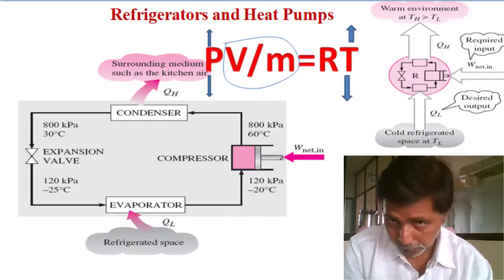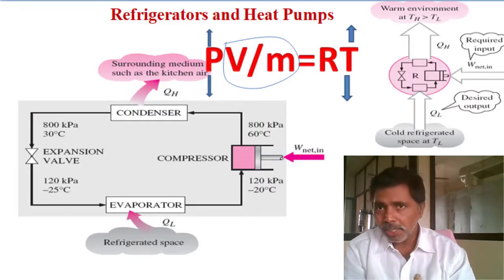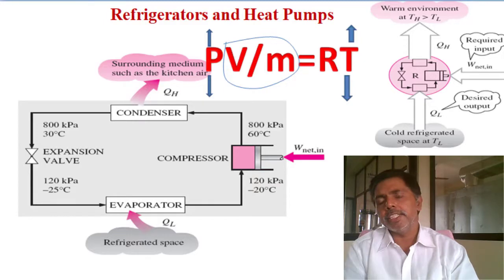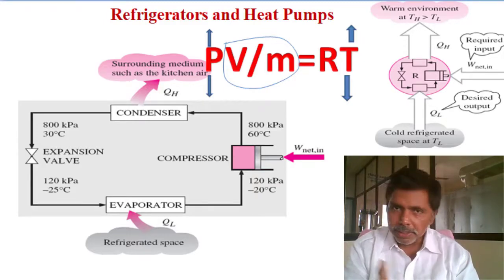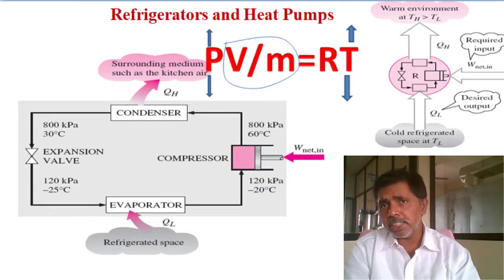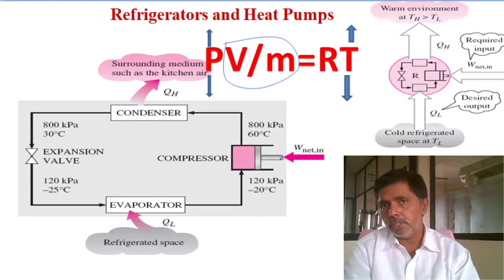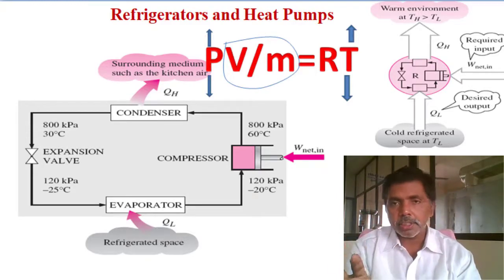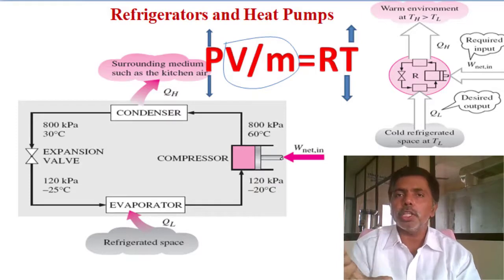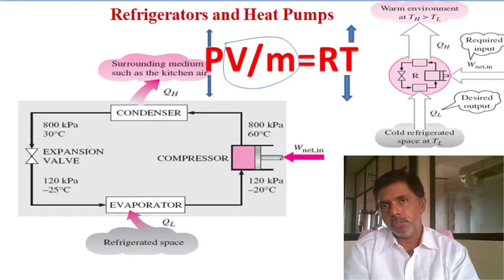Based on the Kelvin-Planck and Clausius statements, the construction of refrigerators and heat pumps follows. The construction is the same. If your desired effect is cooling, it is called a refrigerator. If your desired effect is heating, it is called a heat pump. Both devices are used to transfer heat from low temperature to high temperature.